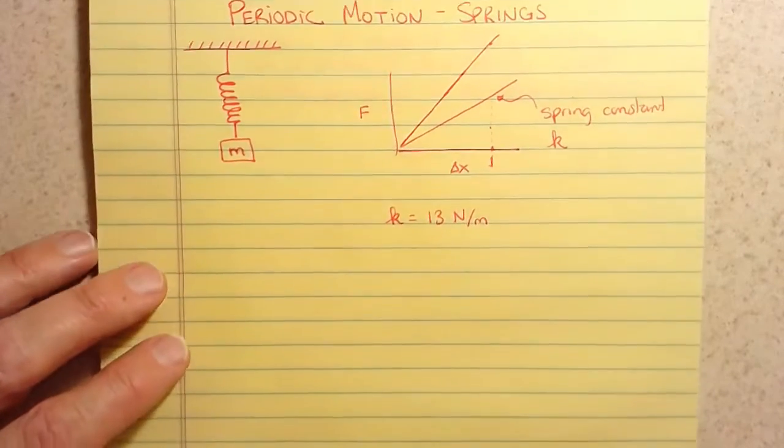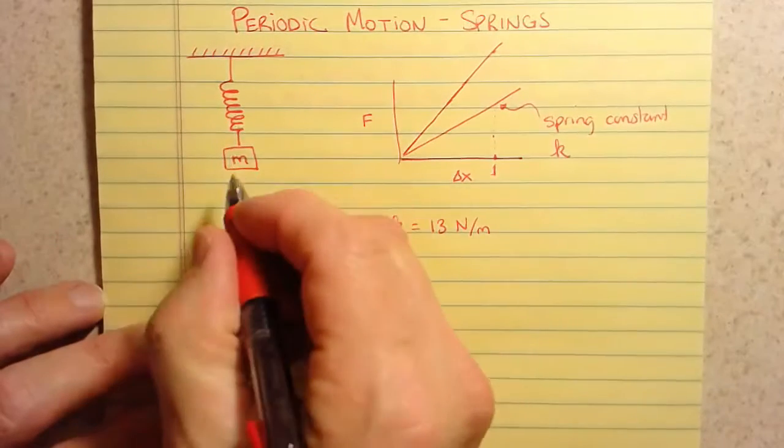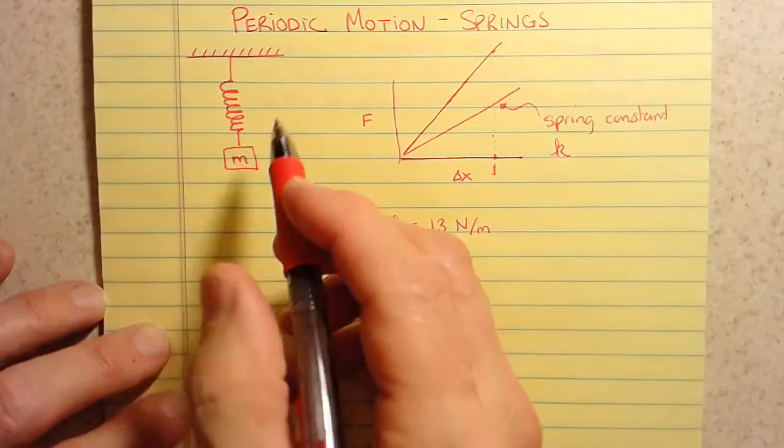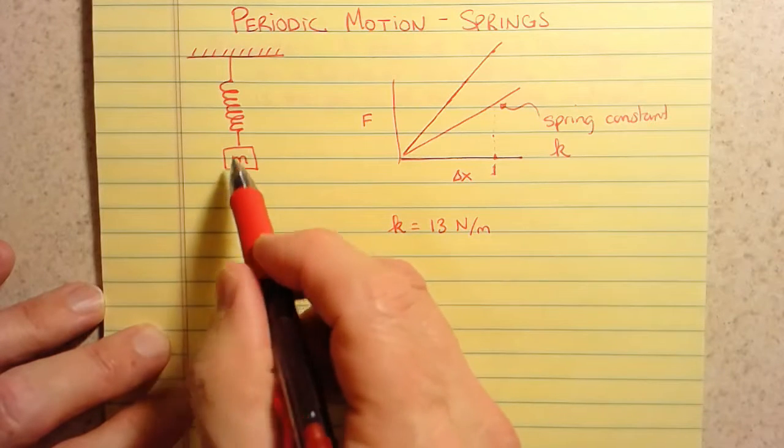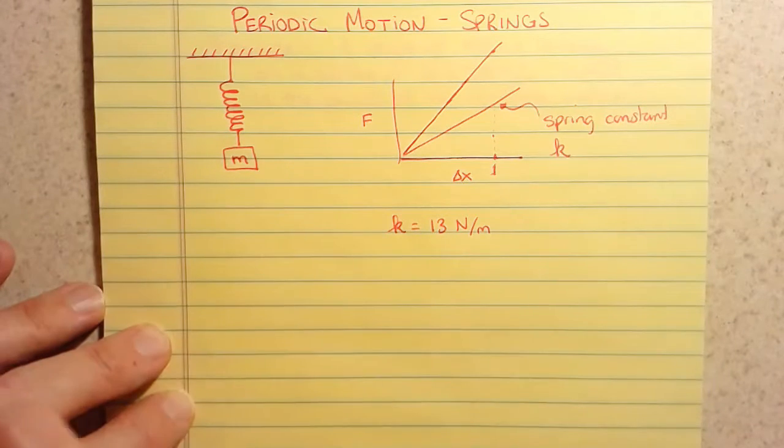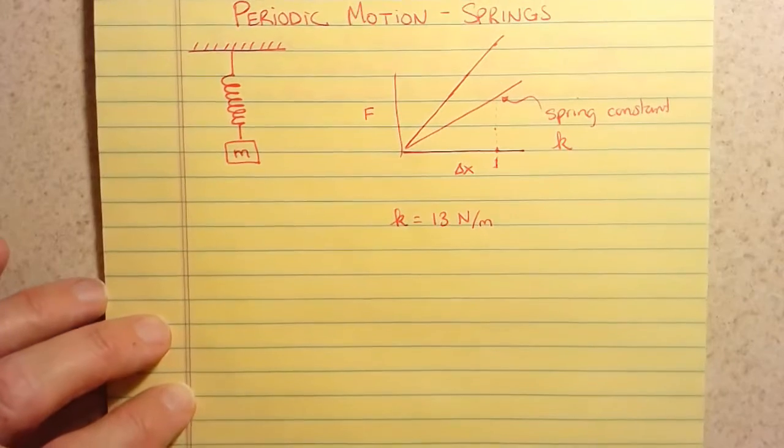Okay, so we need that because what we really care about is what happens when you bump this mass. And you guys, again, saw in lab that when you disturbed the mass, it oscillated back and forth. It exhibited periodic motion. And we want to know how to find the period of that.